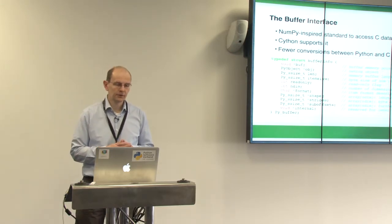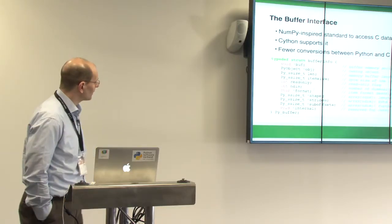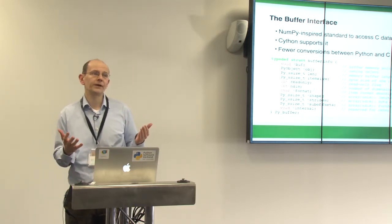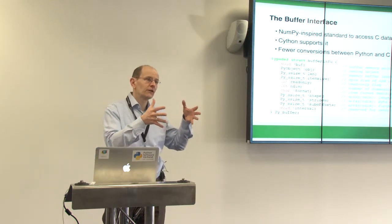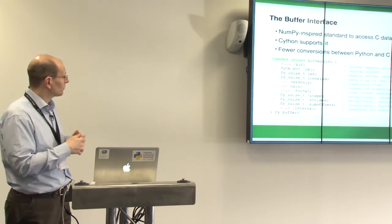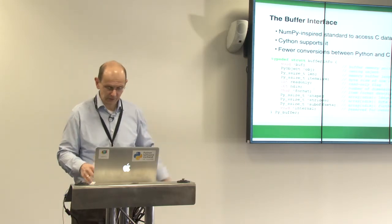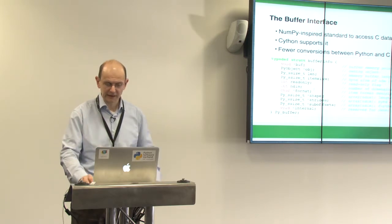Let's get a bit deeper and look at the buffer interface. Ian talked about it already — it's a NumPy-inspired standard to access C data structures from Python. Cython supports this buffer interface, which is important. It's essentially a C struct with a Py_Object and information like size and itemsize — very similar to NumPy. This PyPath object helps to avoid copying data from C to Python back and forth. You just keep data there and have a pointer or reference. Copying data can be costly, so this buffer interface helps make things faster.